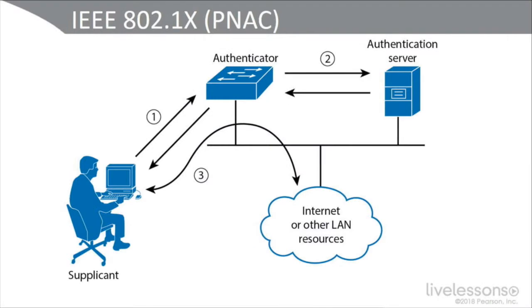It's like the holy grail of access control security at layer two. 802.1X actually operates above 802.3 and .11, which means you can operate in a wireless or a wired environment. Often a company will start out with .1X in their wireless LAN, then expand it over to their Ethernet wired LAN, or vice versa.